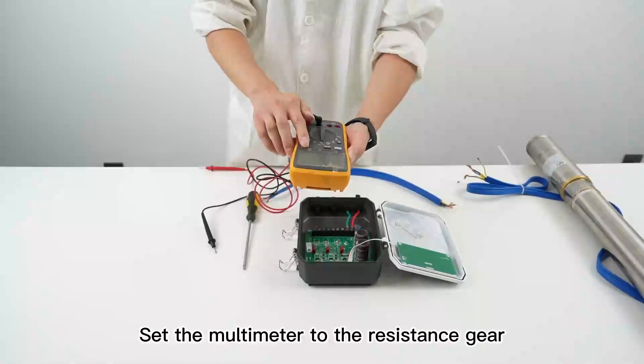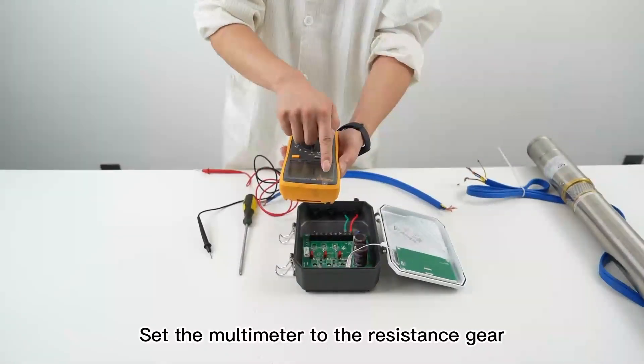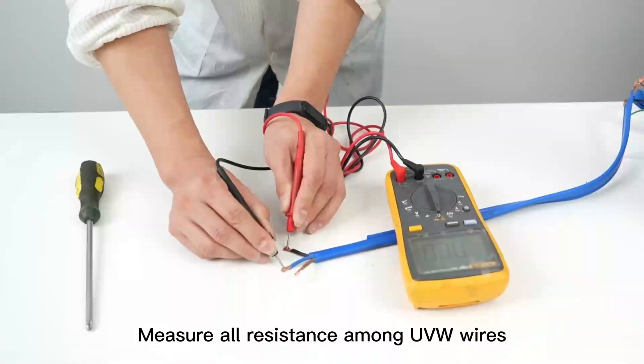Take a multimeter. Set the multimeter to the resistance gear. Measure all resistance among UVW wires.